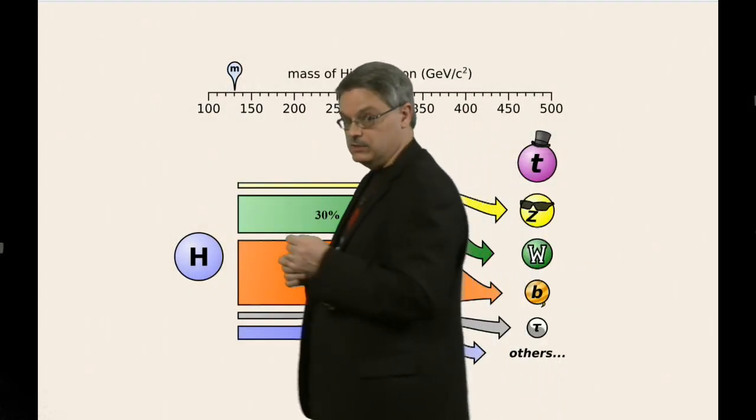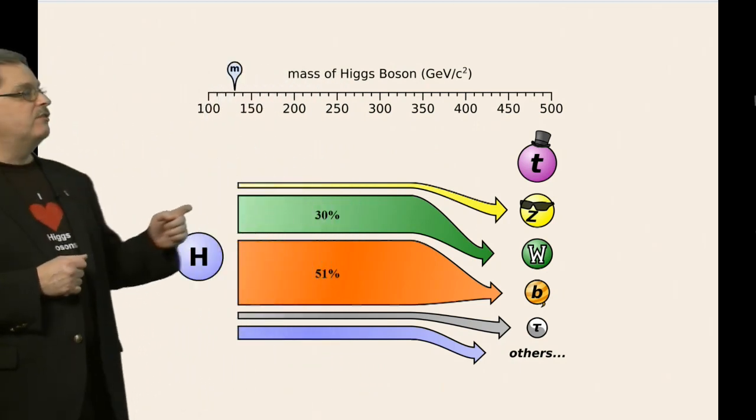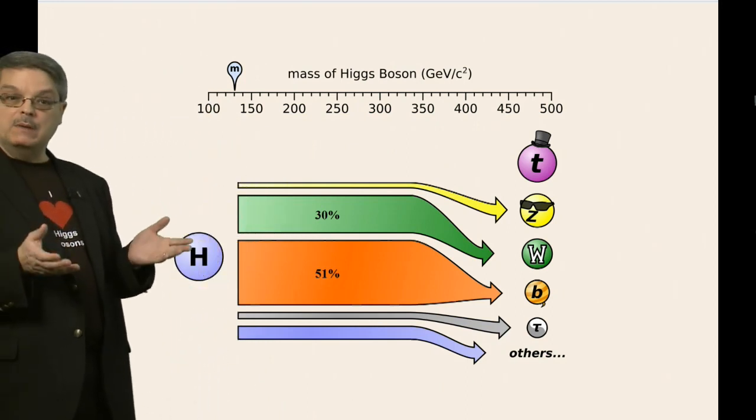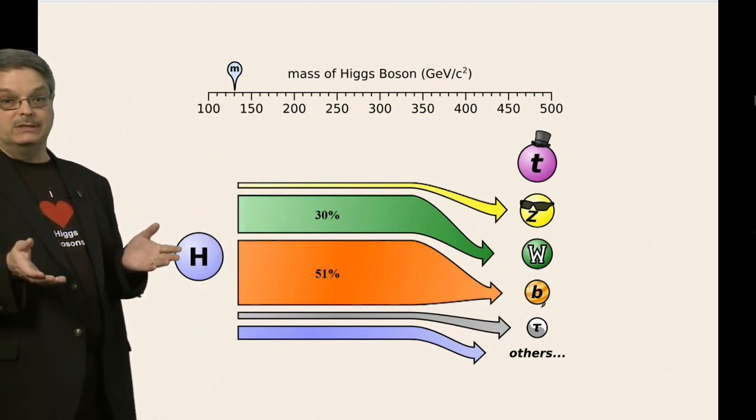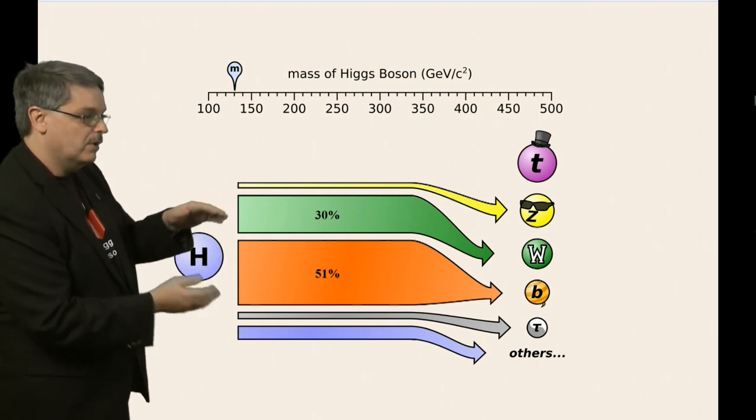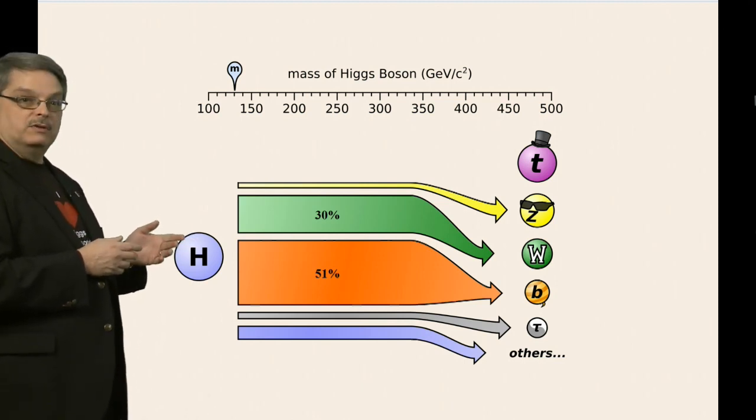So let's take a look at this graphic here. The Higgs boson is on the left while there are five other particles arranged in a column on the right. They are the most common particles into which the Higgs boson can decay. Between them are some bars. The thickness of the bar represents the probability that the Higgs boson will decay into that particle.